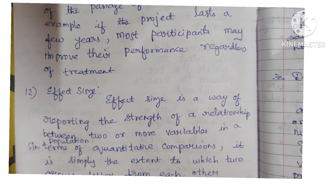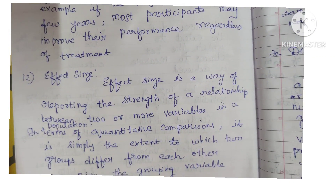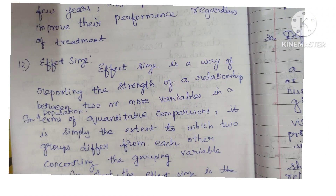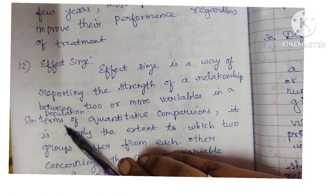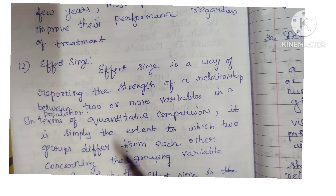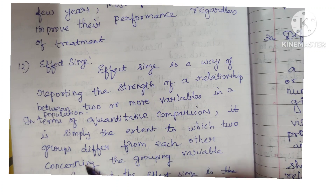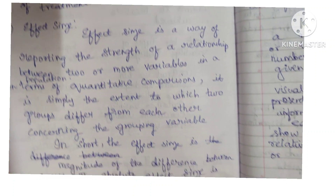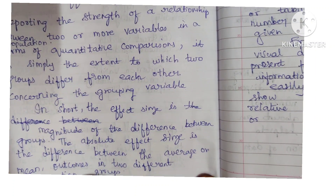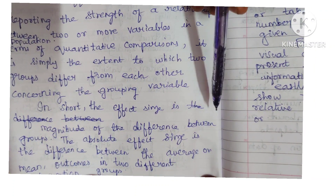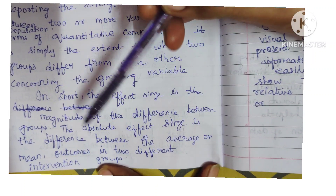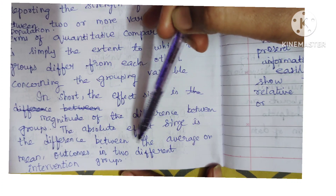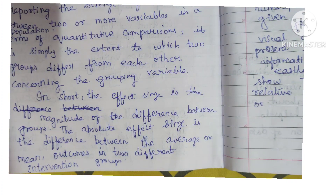Next is effect size. Effect size is a way of reporting the strength of a relationship between two or more variables in a population. In terms of quantitative comparisons, it is the extent to which two groups differ from each other concerning the grouping variable. In short, effect size is the magnitude of the difference between the groups. The absolute effect size is the difference between the average or mean outcomes in two different intervention groups.